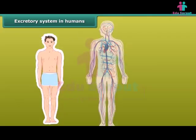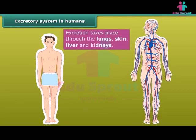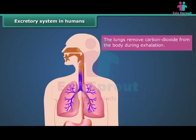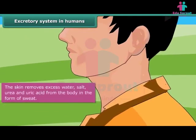Excretion takes place through the lungs, skin, liver, and kidneys. The lungs remove carbon dioxide from the body during exhalation. The skin removes excess water, salt, urea, and uric acid from the body in the form of sweat.